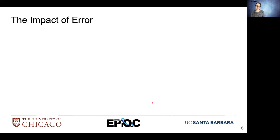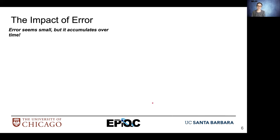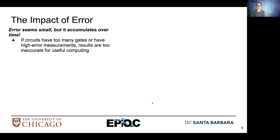So what are the impacts of error? Error might seem small, especially with the metrics we just described, but over time it accumulates and that has a very negative effect on our processing. For example, if circuits have too many gates or have high error measurements, the results are too inaccurate to actually be useful.